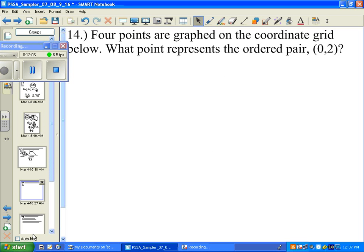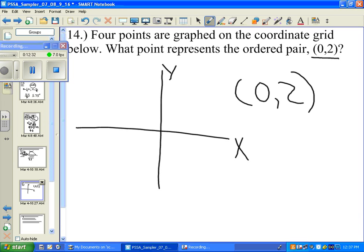Let's take a look at the next. Four points are graphed on a coordinate grid. They want to know which point corresponds or represents the ordered pairs 0 comma 2. I'm going to write an XY graph, label this as X, label this as Y. On an ordered pair, the first number represents our X value and the second number represents our Y value.